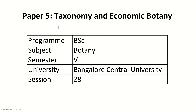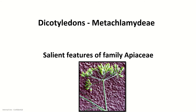Hello students, welcome back to Paper 5 Taxonomy and Economic Botany classes. This paper is for 5th semester BSc students under Bangalore Central University. We will be talking about the salient features of the family named APSC, also known as Umbelliferae.